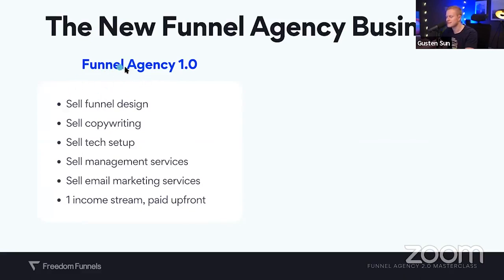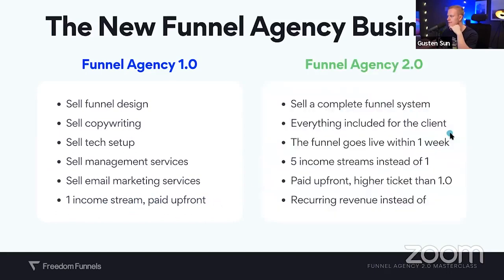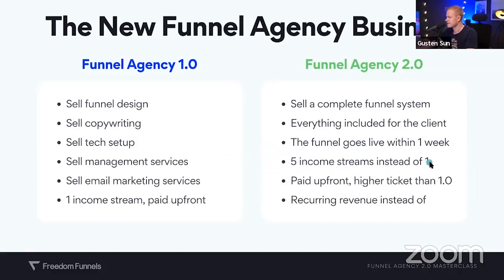Funnel Agency 1.0 was all about selling funnel design, copywriting, tech setup — charge $200 to integrate something, management services at $97 a month, email marketing for $500 a month. One income stream paid upfront. But this is 2.0: instead of 1.0, you sell a complete funnel system. You include everything for the client without doing everything yourself. The funnel goes live within a week. 5K in a week — not a 90-day marketing agency. Five income streams instead of one, paid upfront, higher ticket than 1.0, and recurring revenue instead of just upfront.